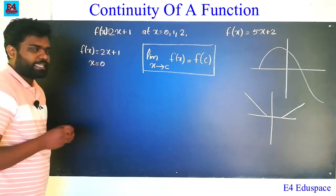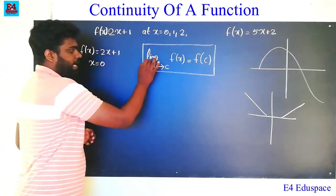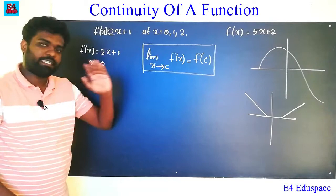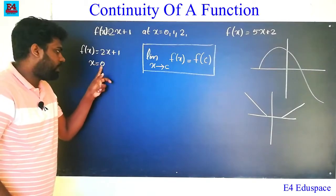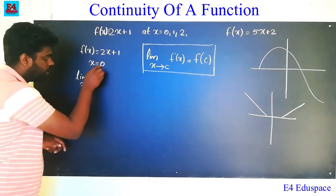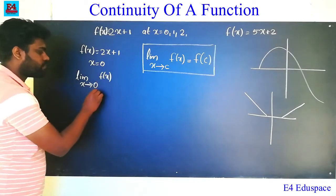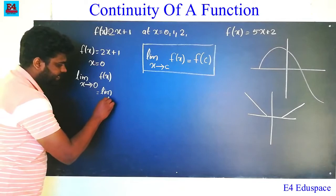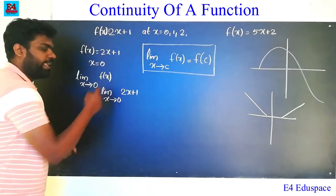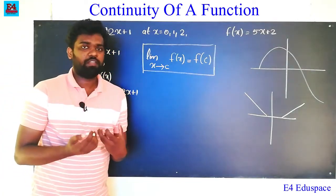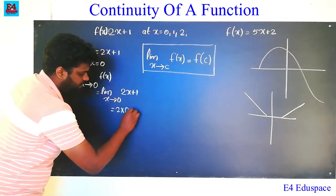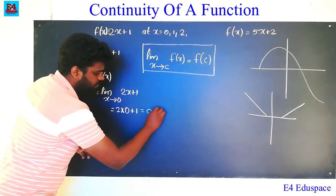f of x equals 2x plus 1, x in the interval. I'm going to check here. Limit x tending to c, f of x — this c is the point. Limit x tending to 0, f of x. If you apply the limit as x tends to 0, f of x equals the function 2x plus 1. Going directly: equal to 2 into 0 plus 1, equal to 0 plus 1, equal to 1.